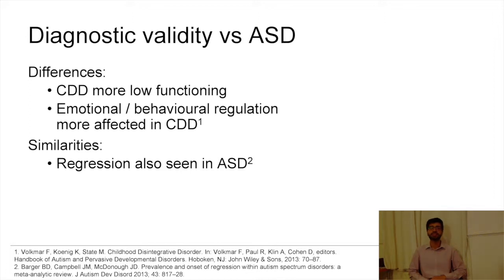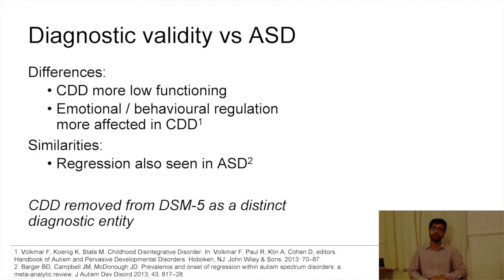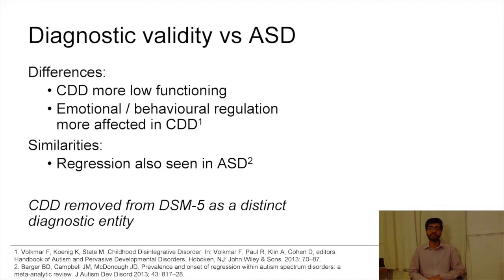Regression in ASD is often preceded by abnormal development, in contrast to the picture in CDD. Given this debate and the currently low quality of evidence on CDD, CDD was removed from the DSM-5 as a distinct diagnostic entity. Using the DSM-5, individuals with CDD would be diagnosed under the umbrella term of autism spectrum disorders, but without a specifier for regression or a marker to highlight the global loss of previously acquired skills, making it even more difficult to study this rare and poorly understood group of patients.